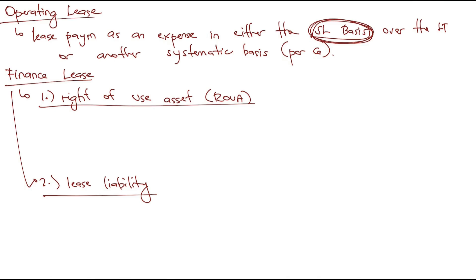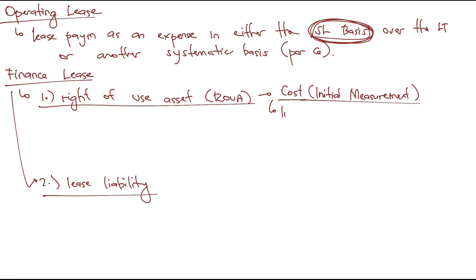According to paragraph 23 of IFRS 16, at commencement date the lessee shall measure the right-of-use asset at cost. This is the initial measurement. The next question is: what is the composition of cost? Cost has five components. Number one is the initial measurement of lease liability — if this is wrong, the RUA will also be wrong.